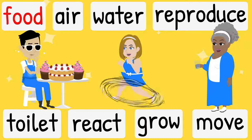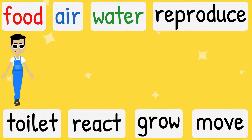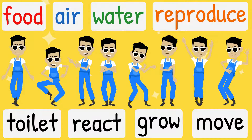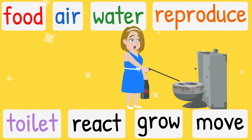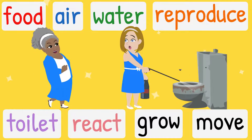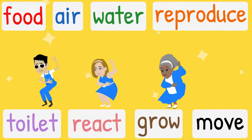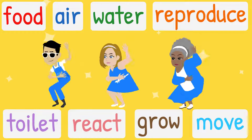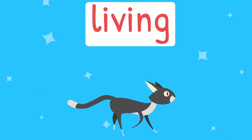Living things need food, air and water. Living things can reproduce and go to toilet. Living things react to their surroundings. Living things can grow and move.